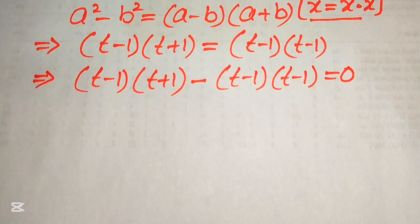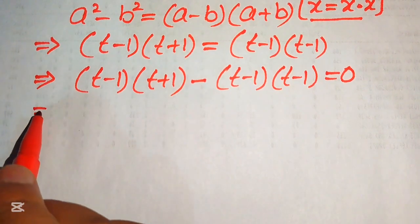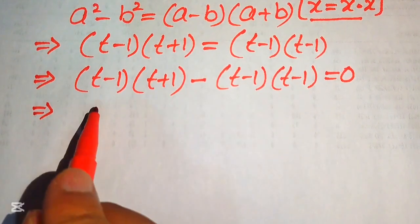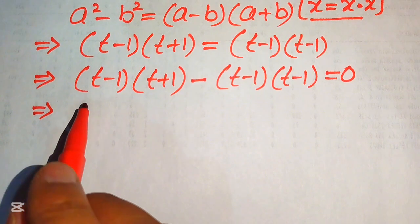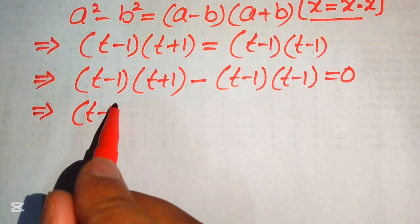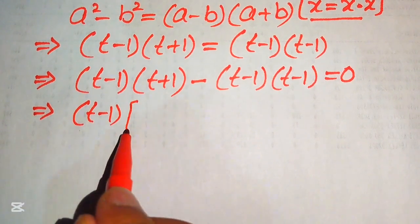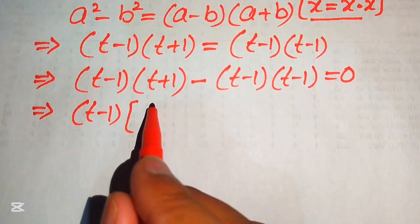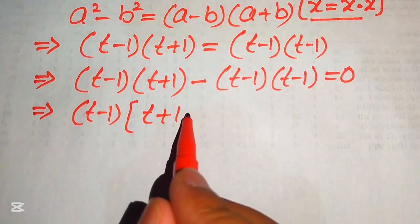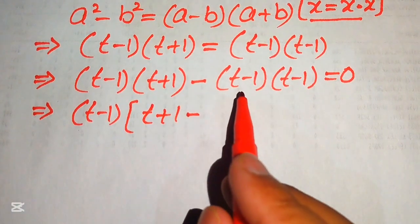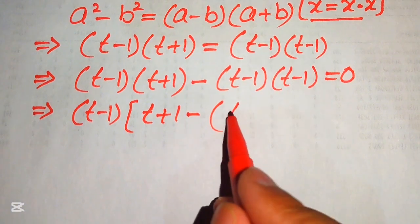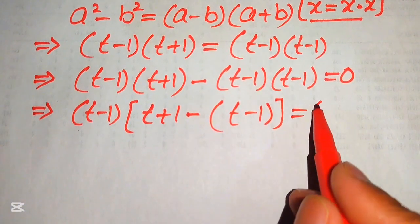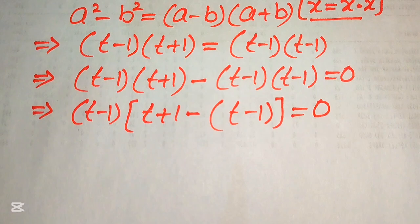We see that t minus 1 is common to both terms, so we factor it out. Taking t minus 1 common, the remaining values are t plus 1 and t minus 1, giving t minus 1 times t plus 1 minus t minus 1 equals zero.